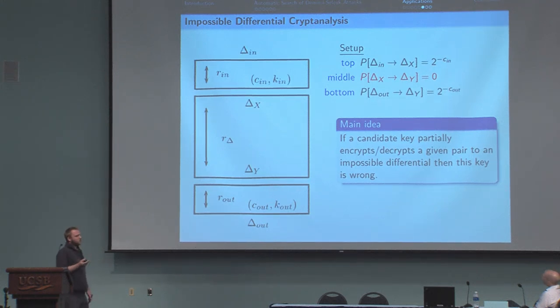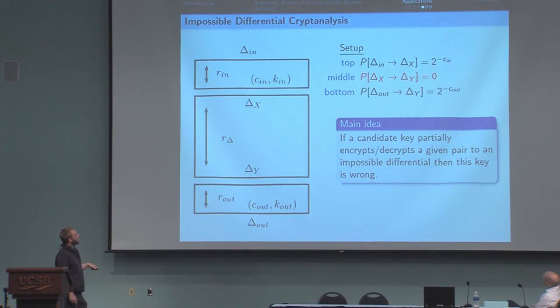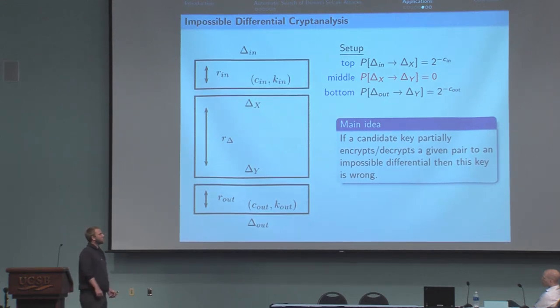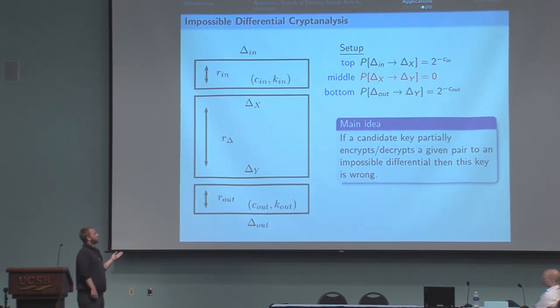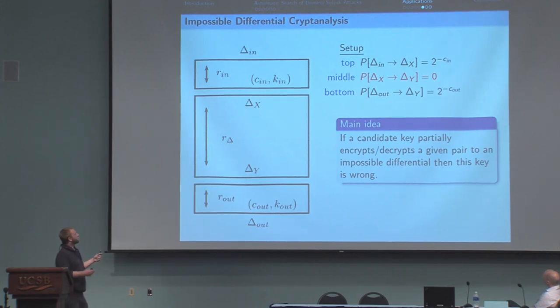We can also reuse the truncated characteristic search to build a tool searching for impossible differential attacks. Basically, such kind of attacks are composed of two differences propagated in both ways with probability one, such that the transition from the first one to the second one is impossible. We just used our search of truncated characteristics and combined two of them and check if there are some contradictions.